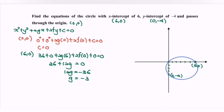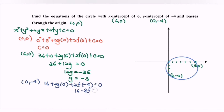Next, substitute the point (0, negative 4), where x is 0 and y is negative 4. So 0 plus 16 plus 2g times 0 plus 2f times negative 4 plus c. As we know, c is equal to 0. We will have 16 minus 8f equals to 0. Rearranging: 8f equals 16, so f equals 2.